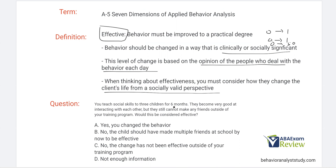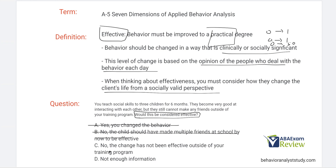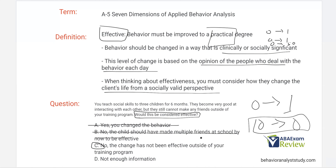You teach social skills to three children for six months. They become very good at interacting with each other, but still cannot make any friends outside your training program. Would this be considered effective? They've gone from zero to zero in the real world — that's not effective at all. Option C: no, the change has not been effective outside of the training program. If they can't make any friends outside, what's the point of these social skills? We need real change to a practical degree, not just change within the training setting.